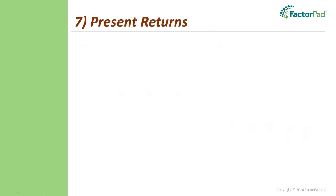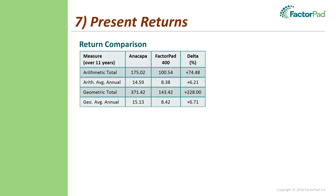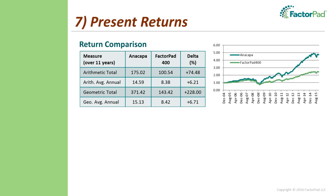Step seven: present returns. Let's start with a fairly standard return comparison table. While I'm showing both arithmetic and geometric returns, I'd suggest picking one method and sticking with it for consistency. This book-to-price ratio Anacapa strategy posted a 74% premium or 6.21% per year without fees — not bad. Geometric returns take compounding into consideration, so over such a long period the outperformance is magnified. Here's the famous mountain chart using geometric returns — some elect to plop one of these in front of investors and expect the institutional money to flow, but that may not work even with this type of outperformance.